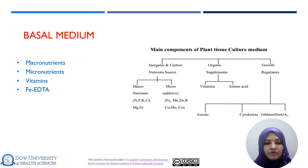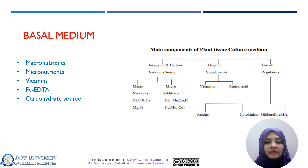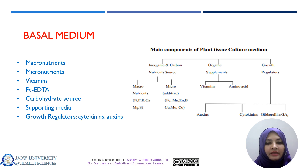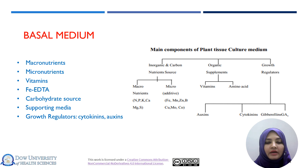Iron is also a component of the basal medium required in very low concentration. Another requirement is a carbohydrate source. Carbohydrate is also very important and can be provided in the form of sucrose; different sugars can be provided for carbon metabolism and nourishment. The medium is also supplied with plant growth regulators, which are synthetic plant growth hormones such as auxin, cytokinin, and gibberellins.